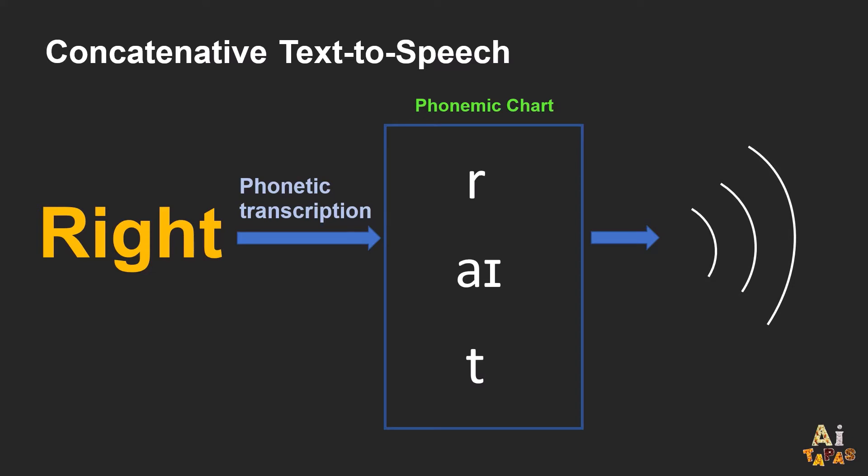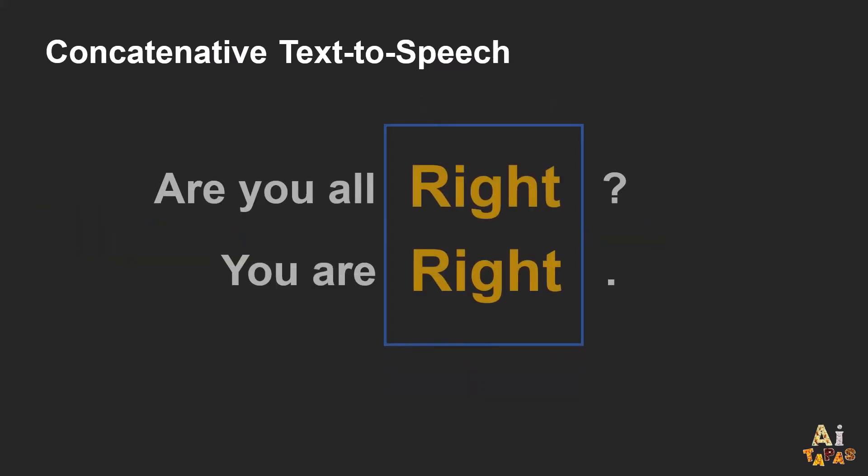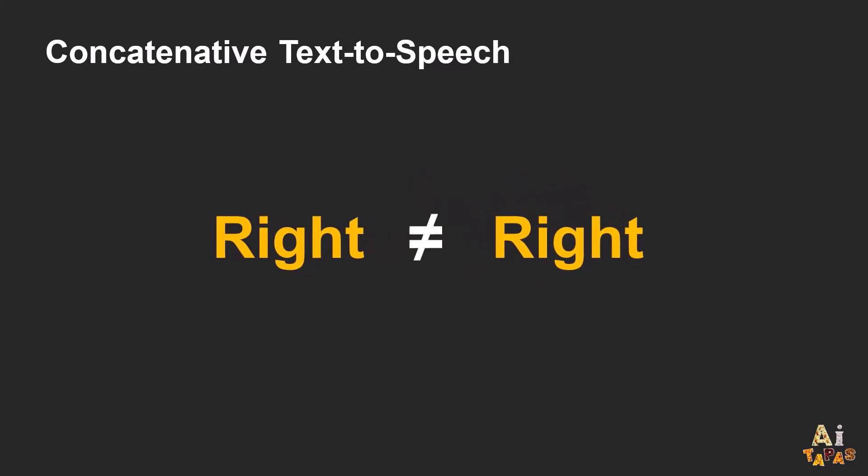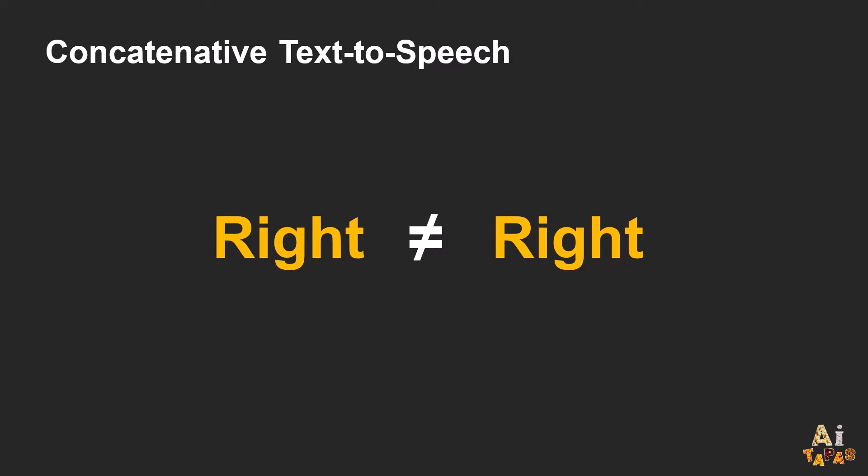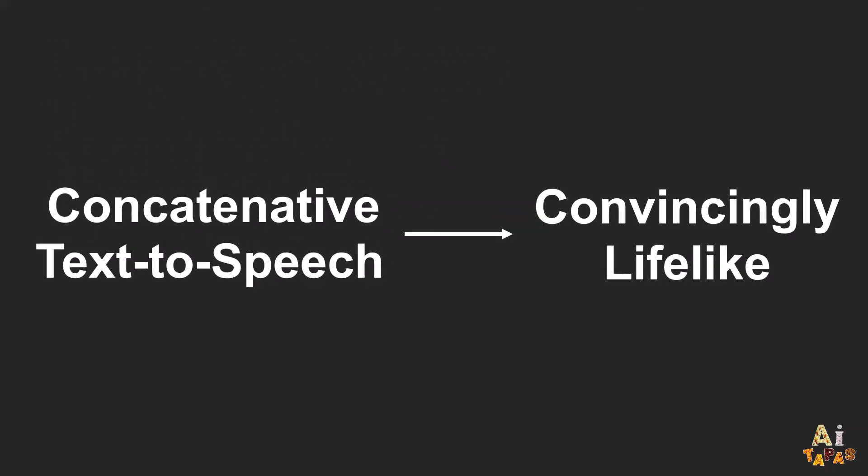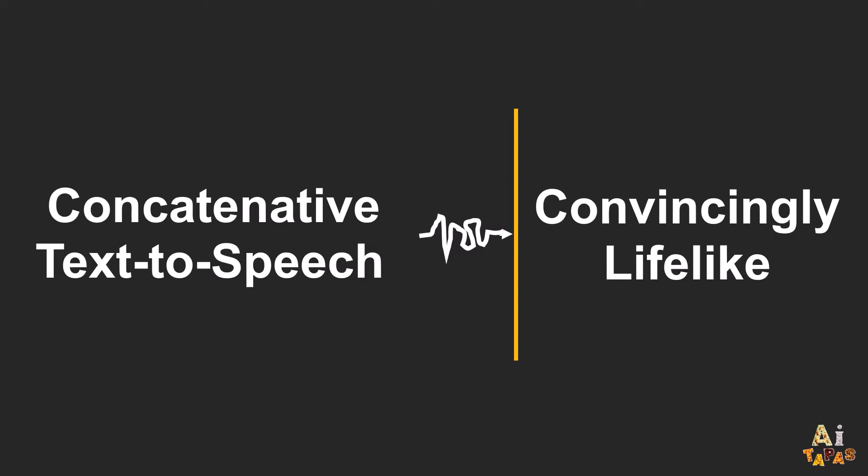However, although we have technically solved text-to-speech in this way, the speech output is far from natural sounding. Using our approach described earlier, the word right will sound the same in the sentences are you alright and you are right. These two rights sound different in tone, and perhaps we can improve by adding intonation transcriptions and corresponding recordings. And the speech may become increasingly lifelike. But you can easily imagine a whole lot of other scenarios. In that case then, how can we produce lifelike speech?